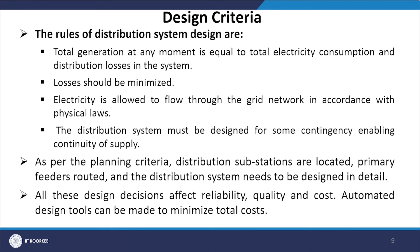The major criteria and rules for distribution system design are: total generation at any moment must equal total electricity consumption plus distribution losses; losses should be minimized; electricity flows through the grid in accordance with physical laws; and the distribution system must be designed for contingency to enable continuity of supply. It is better to have at least N-1 contingency for substation transformers and main feeders. Design decisions on substation location, primary feeder routing and system layout all affect reliability, quality and cost. Automated design tools can help minimize total cost.